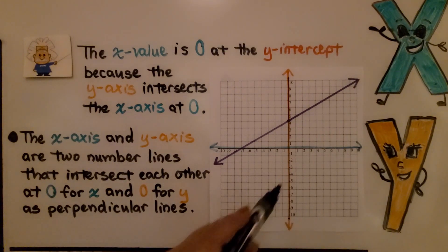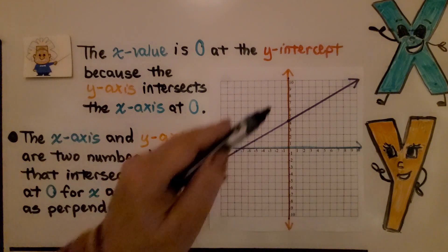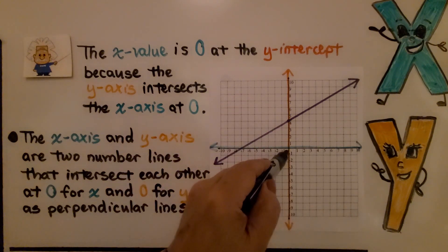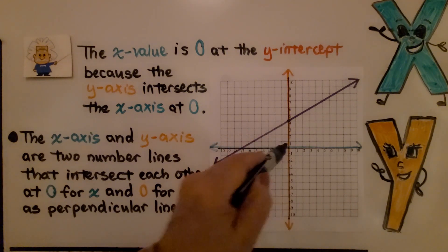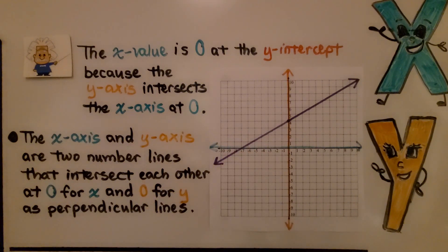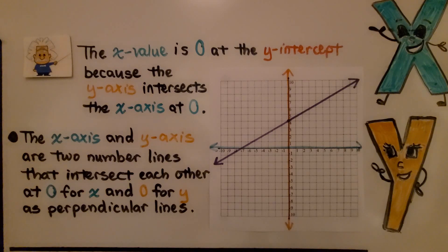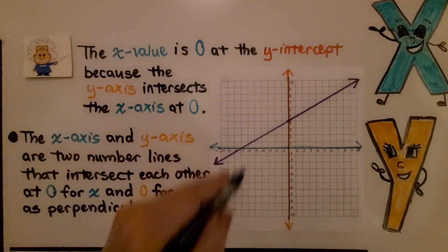The x value is 0 at the y-intercept because the y-axis intersects the x-axis at 0. You can see here's negative 1, there's positive 1, 0 is in between. So the y-intercept is where 0 is on the x-axis. The x-axis and y-axis are two number lines that intersect each other at 0 for x and 0 for y as perpendicular lines.